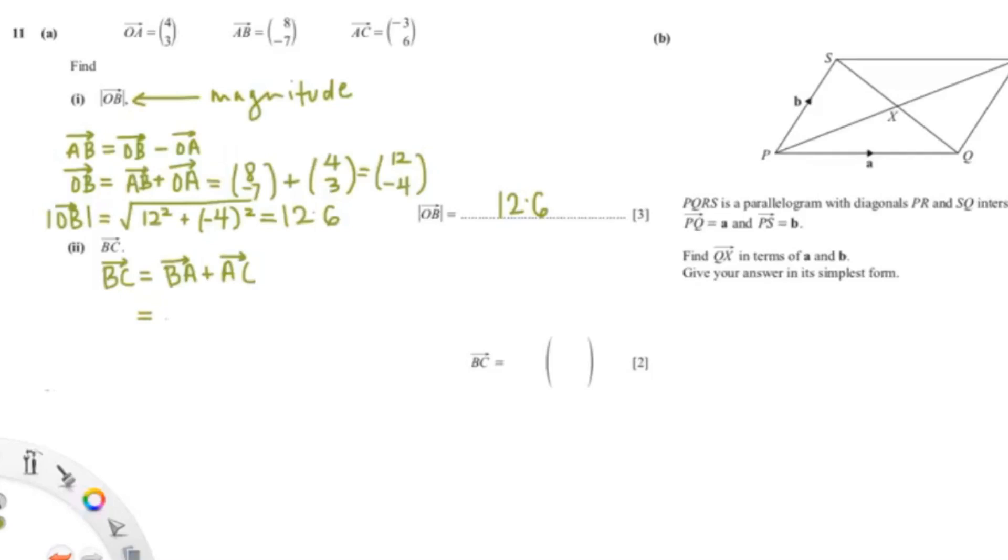So BC would be the negative of AB, so we could have BA. So it's negative 8 and negative 7 plus AC, which is negative 3 and 6. So negative 8 minus 3 gives us negative 11, and 7 plus 6 gives us 13. So the vector for BC is negative 11 and 13.